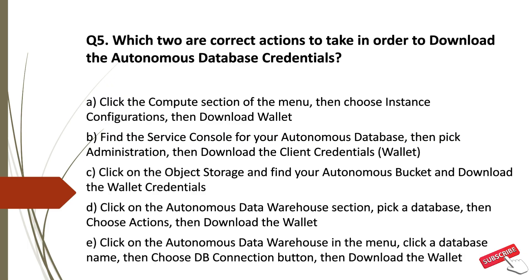Option A: Click the compute section of the menu — you can't download the wallet from the compute section, so this is incorrect. Option B: Service console → administration → download client credentials — this is the second method we discussed, so this is correct. Option C: Object storage — you won't be able to download wallet credentials from object storage, so this is incorrect. Option D: Autonomous Data Warehouse section → pick database → choose action → download wallet — this is also incorrect. Option E: Autonomous Data Warehouse menu → click database name → DB connection button → download wallet — this is the first method, so this is correct. The correct options for Question 5 are B and E.